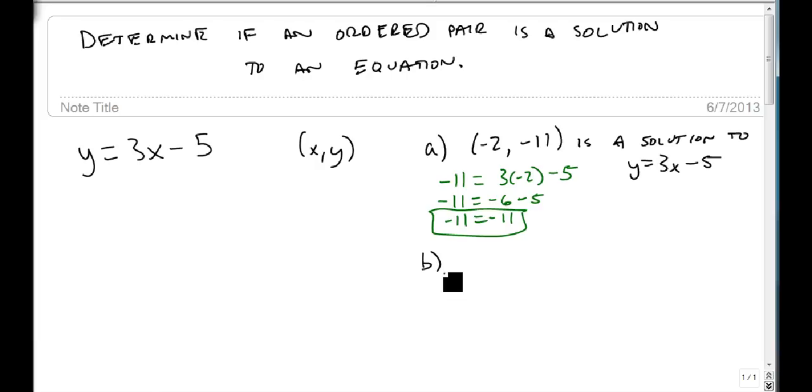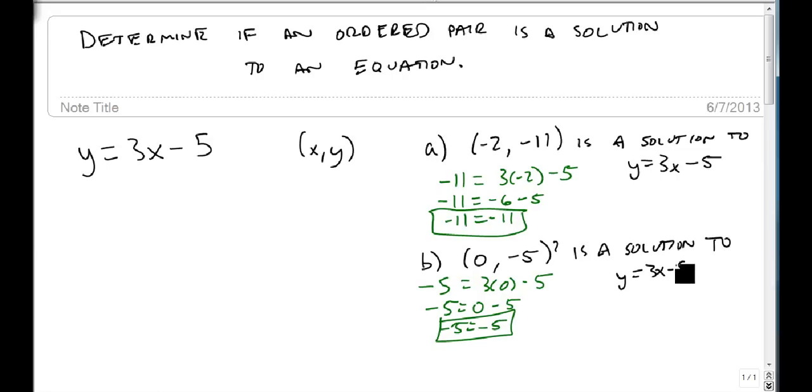What about 0 minus 5? Is 0 minus 5 a solution? Let's plug this in. We get minus 5 equals 3 times 0 minus 5. That's minus 5 equals 0 minus 5. Minus 5 equals minus 5. Notice again, this works. So 0 minus 5 is also a solution to y equals 3x minus 5.